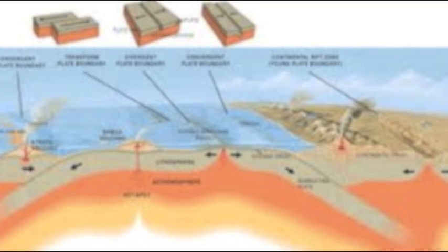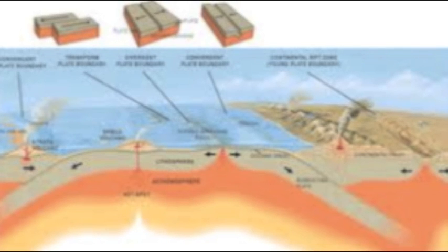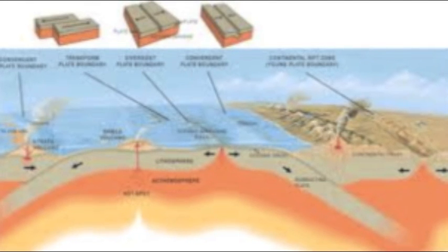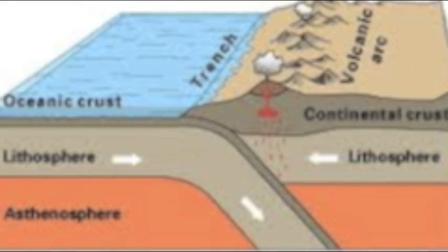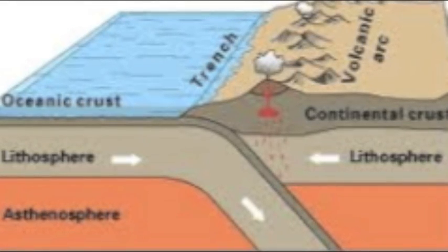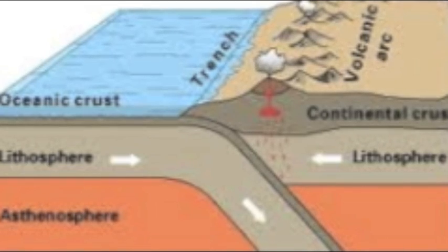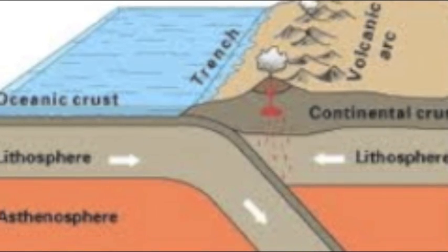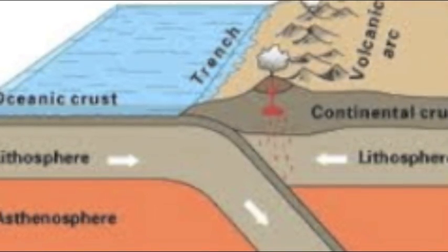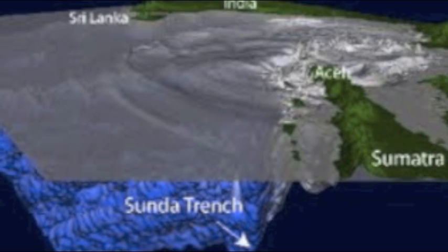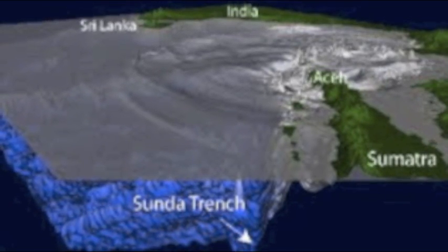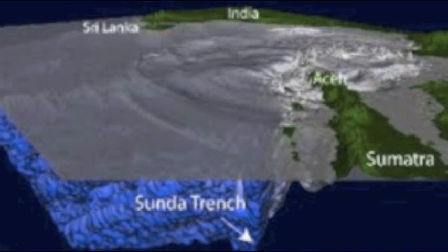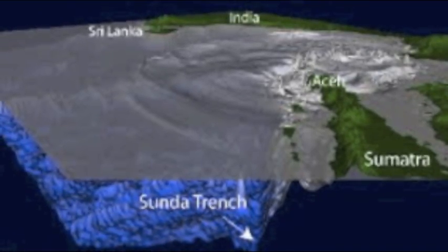The mantle underneath the tectonic plates is constantly recirculating, causing the plates to float around slowly in a process called tectonic drift. Tectonic plates are famously known for being the source of earthquakes. Because continents are part of these plates, they also move. An earthquake occurs when the rocks break and move as a result of stress caused by plate movements.